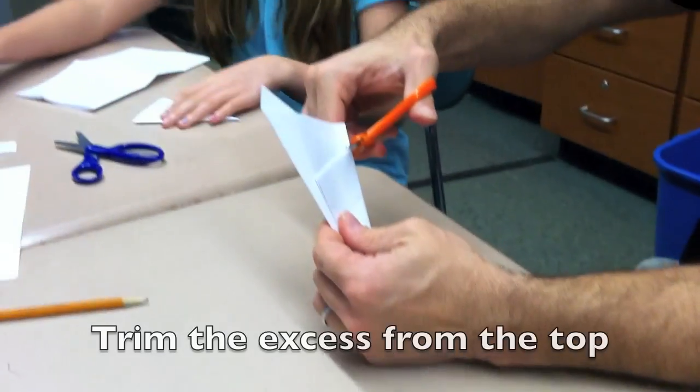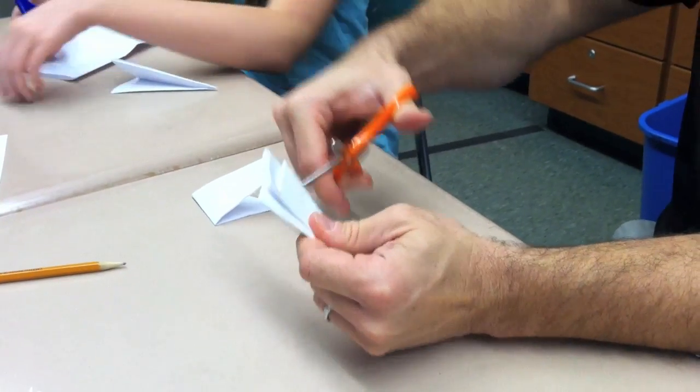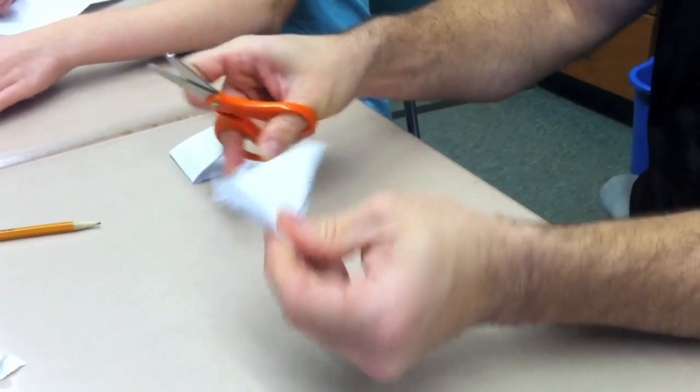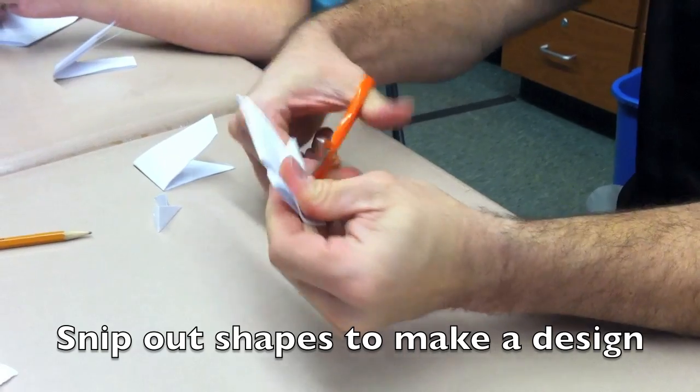Now, trim off the excess at the top, and then go about cutting designs in your snowflake. Anything you cut will be unfolded, and it will turn into a beautiful snowflake when you're finished.